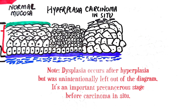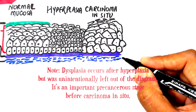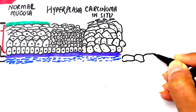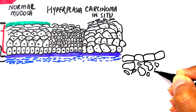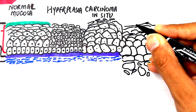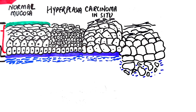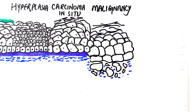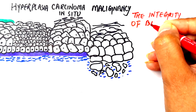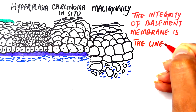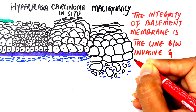Dysplasia is considered precancerous and is seen only in some parts of the tissue, while carcinoma in situ involves the entire thickness of the epithelium. Once the basement membrane is breached, malignant cells invade the connective tissue, blood vessels, and lymphatics — marking invasive squamous cell carcinoma. The integrity of the basement membrane is therefore the defining line between non-invasive and invasive cancer.